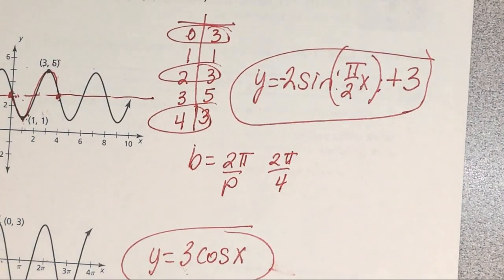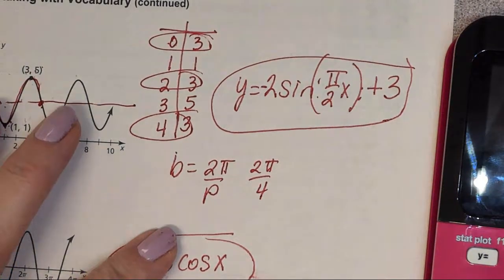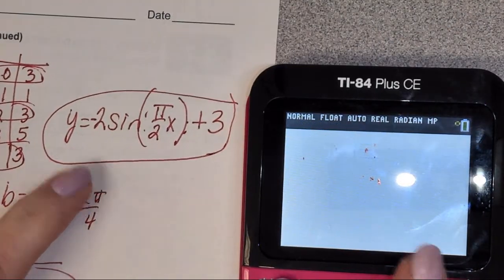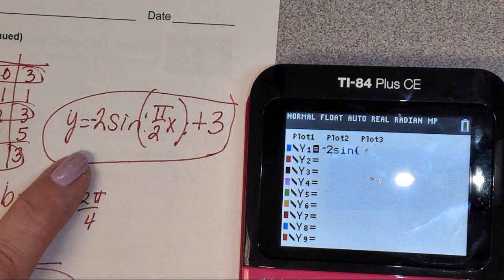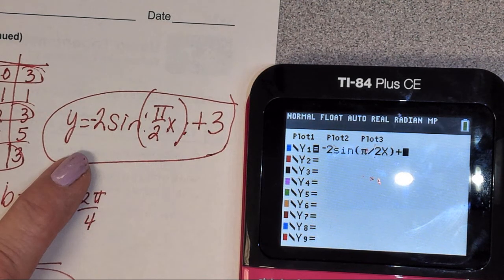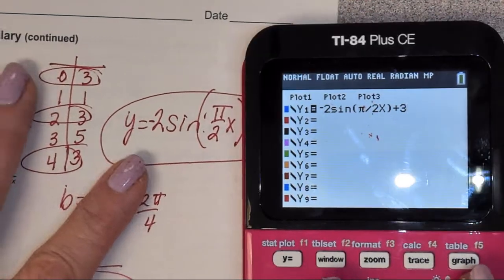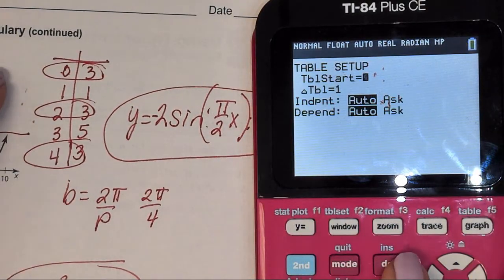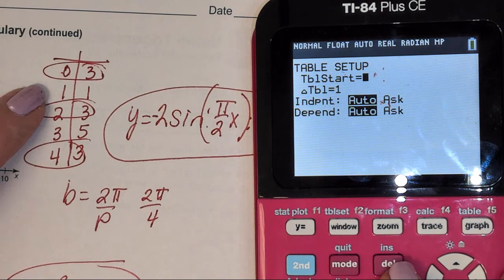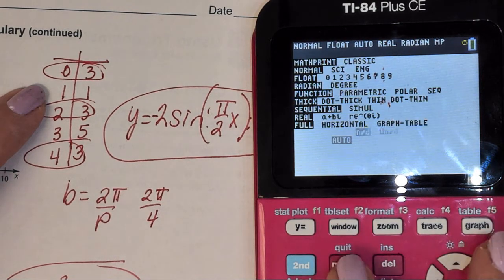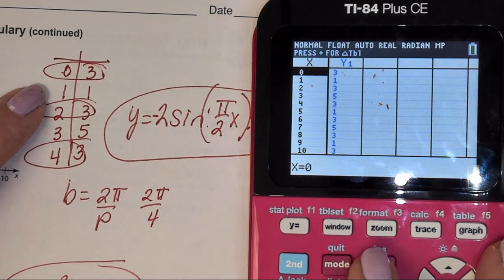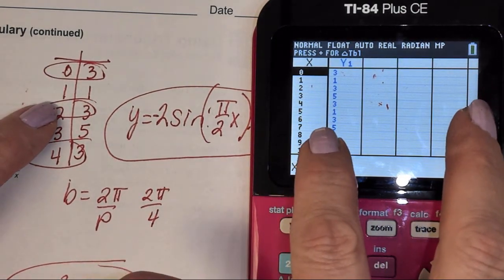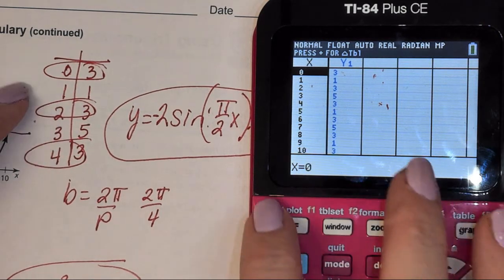I want to show you how I can check this now. I can go to my calculator and type this in. I've typed it in. I need to set up my table, so second window. Table starts at zero, going up by one. I'm going to double check my mode, make sure I'm in radians. Now I look at my table of values. See how all those points show up so I know my points are correct?